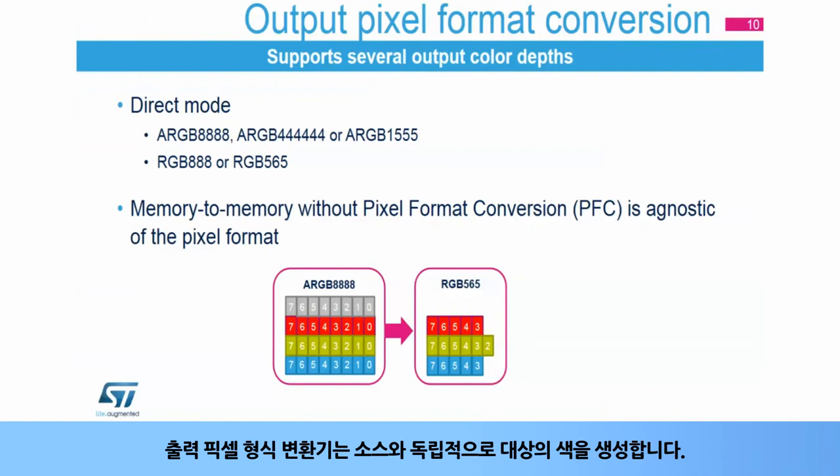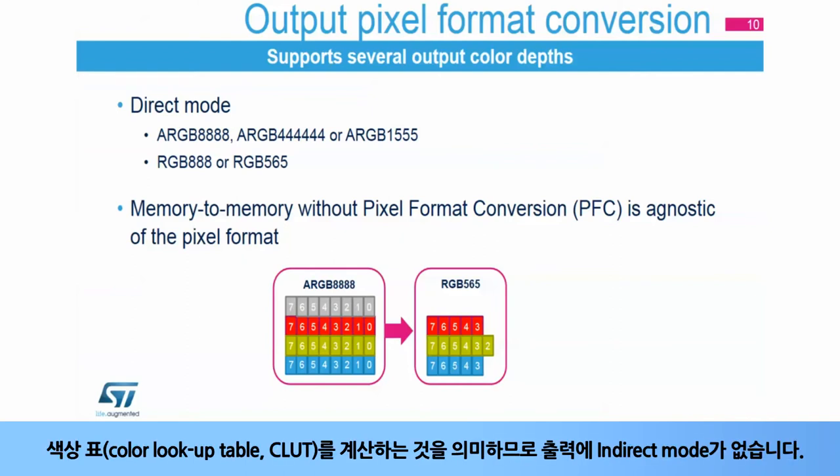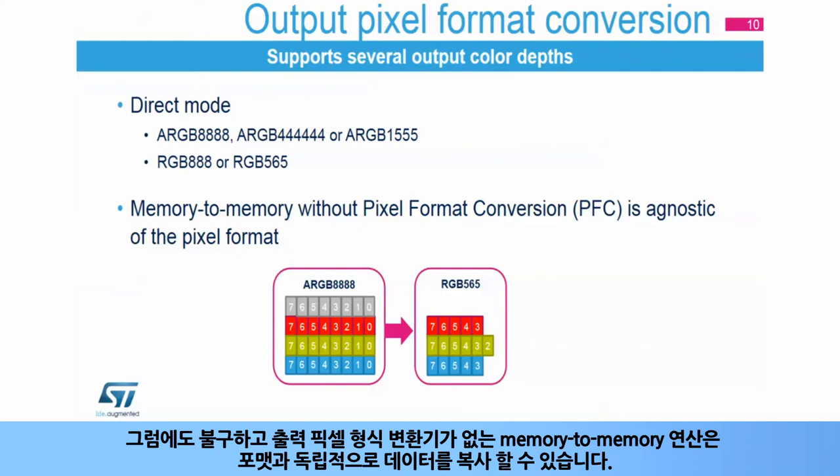The output pixel format converter generates the color for the destination independently from the source. There is no indirect mode in output, as this would imply having to calculate a color lookup table or CLUT. Nevertheless, memory-to-memory operations without pixel format conversion can copy data independently of their formats.